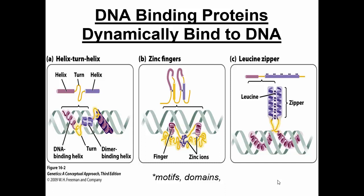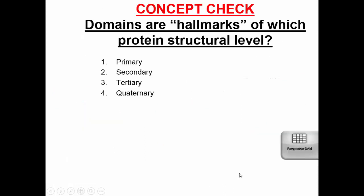Whenever amino acids interact with DNA, they interact with different grooves. There's a major groove, which is the large gap in the DNA, and a minor groove, which is the small gap. Whenever they're interacting, they're interacting through their tertiary structure or their domain. Quick question: domains are hallmarks of which protein structure level? Tertiary is the answer — that's the structural level we're focusing on when we talk about domains.